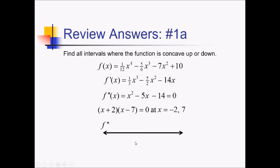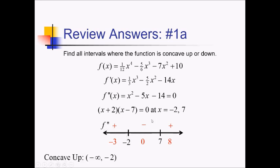So let me make an f double prime number line with critical values of negative 2 and 7, and do a little side analysis around those. For the interval less than negative 2, I'll use negative 3: (−3 + 2) is negative, (−3 − 7) is also negative, so negative times negative is positive. Between negative 2 and 7, using zero gives a positive and a negative, so that's negative overall. Something bigger than 7, like 8, gives positive times positive, which is positive. So we are concave up on (−∞, −2) union (7, +∞), and concave down on the interval from negative 2 to 7.